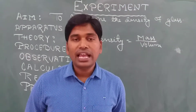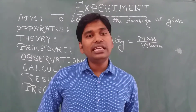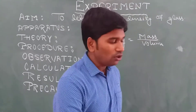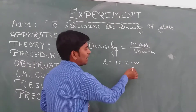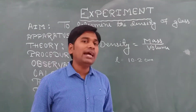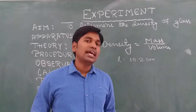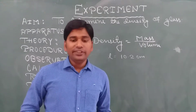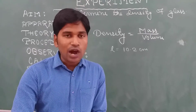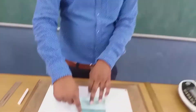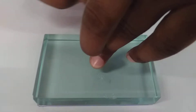We will calculate the length two or three times and take the average. The length I got is 10.2 centimeters. Another way is to use a pen or pencil and draw the outline of the glass slab, and then measure its length from that outline. So we take the outline of the glass slab and measure from it.